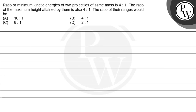Hello, children. Let's read the question. The question says that the ratio of minimum kinetic energies of two projectiles of same masses is 4 to 1, and the ratio of maximum height attained by them is also 4 to 1. We have to find the ratio of their ranges.